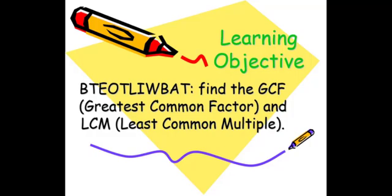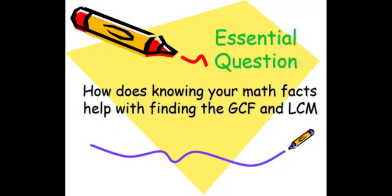Our lesson goal for today will be we're going to find the GCF, the greatest common factor, and the least common multiple. Our essential question is, how does knowing your math facts help with finding the GCF and the LCM?